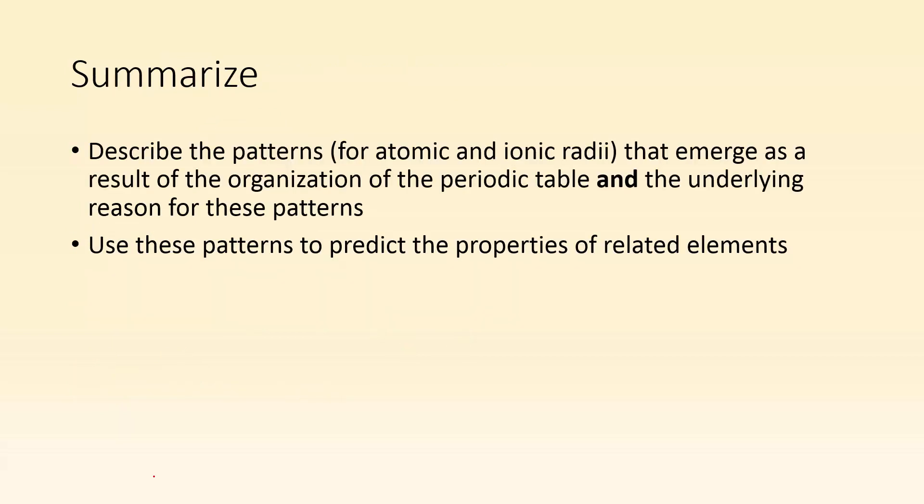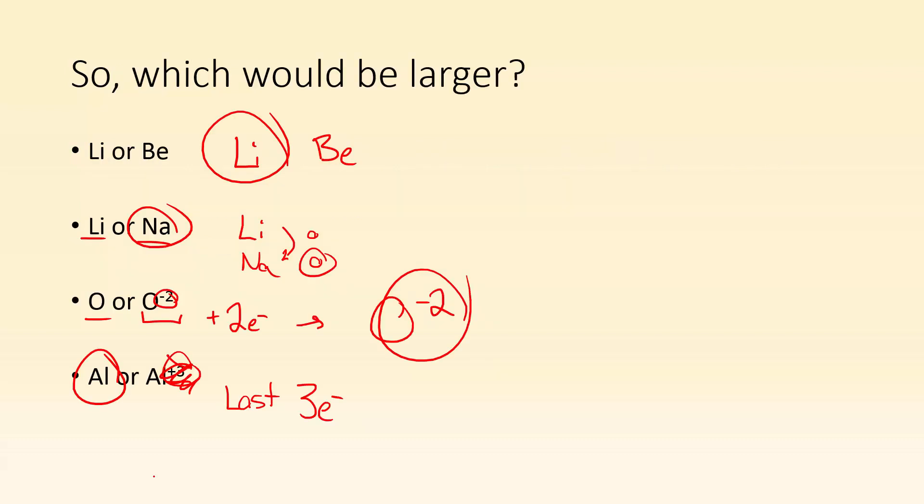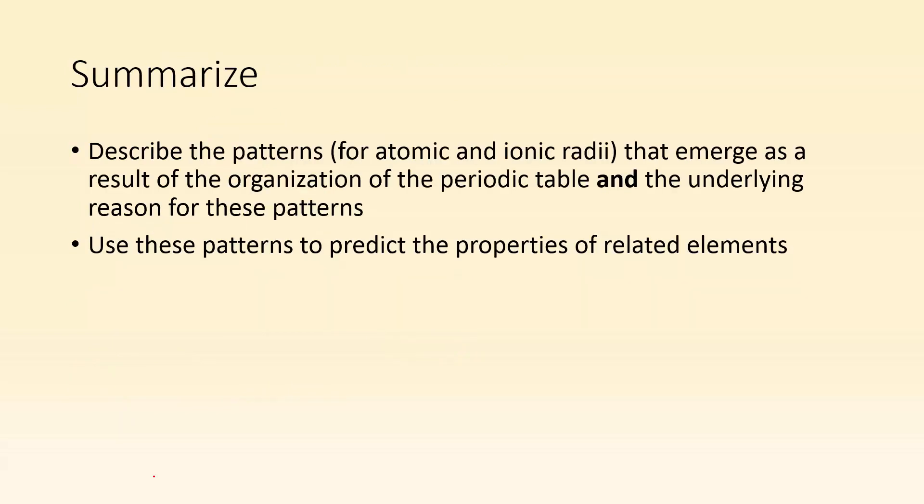So summarize. Hopefully you can describe the patterns for atomic and ionic radii that emerge as a result of the organization of the periodic table and the underlying reasons for those patterns. And hopefully you can use these patterns to predict the properties of related elements. Comparing which one should be bigger, hopefully you can look at the periodic table and be able to tell. I hope you found that helpful. See you in class.